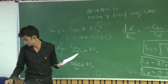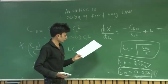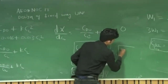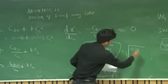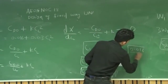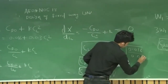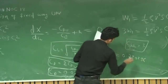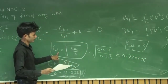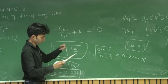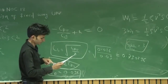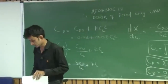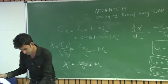The tenth question asks for the CL at maximum L/D condition. Using CL = sqrt(CD0/K) = sqrt(0.016/0.03) = 0.730296. So CL = 0.730296 for question 10, and CD = 0.032 for question 9. That covers all of assignment 3. Now we will discuss assignment 4.